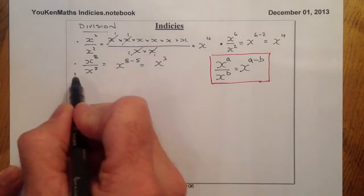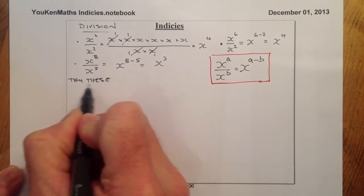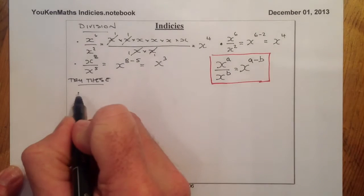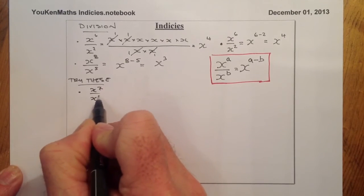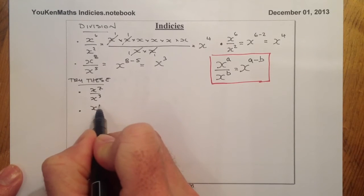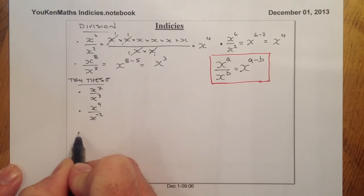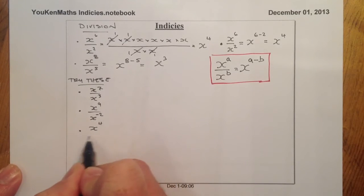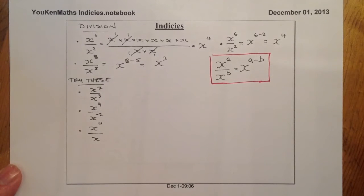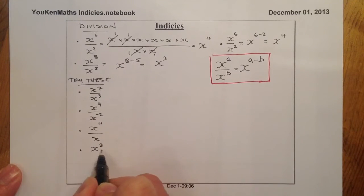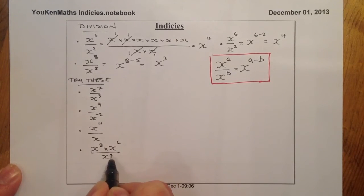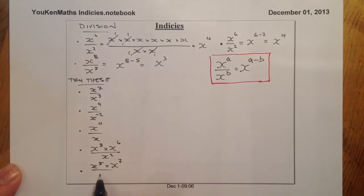I'll give you a couple of questions to try. You can freeze the video and have a go, and I'll give the answers shortly. The questions are: x to the power of 7 over x to the power of 3; x to the power of 9 over x to the power of minus 2 — be careful with that one; and x to the power of 4 over x. There are also a couple of additional questions involving a combination of multiplying and dividing.